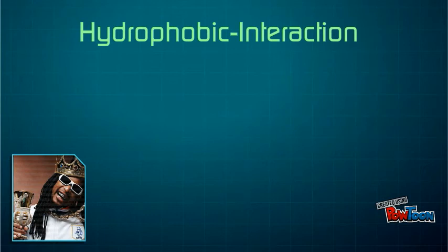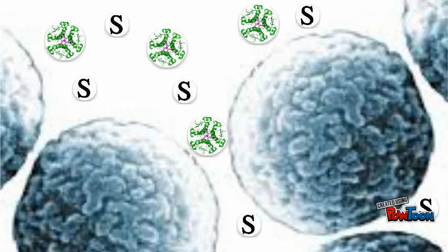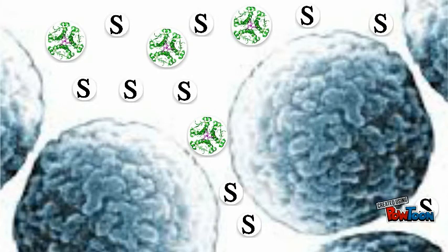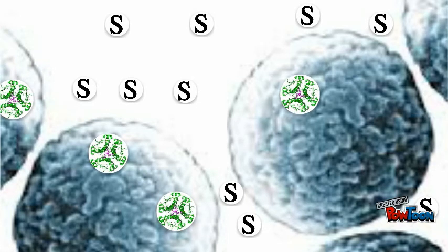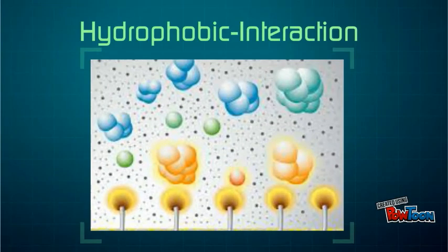Now we move on to hydrophobic interaction chromatography. This method is the newest form of column chromatography and involves separating molecules based upon their hydrophobicity. It works similarly to how size exclusion and ion exchange chromatographies operate. The solution of proteins is mixed with a high-salt buffer that reduces the solvation of the molecules. As solvation goes down, the protein's hydrophobic regions become exposed, which are then absorbed by the media. The more hydrophobic a protein is, the lower the concentration of buffer needed to promote its binding to the media. To elute the proteins, a decreasing salt gradient is used, and this process can be assisted by detergents and organic molecules. This method is done in order to purify a protein solution while allowing it to retain functionality.